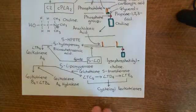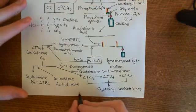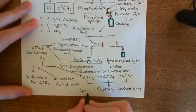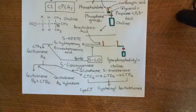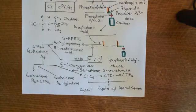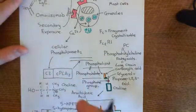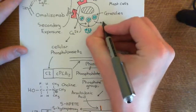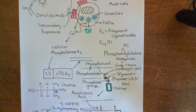The cysteinyl leukotrienes — leukotriene C4, D4, and E4 — are always found together, never in isolation, so it makes sense to think of them collectively. They are abbreviated as cys-LT. So overall, the mast cell is producing histamine, leukotriene B4, the cysteinyl leukotrienes, and also tumor necrosis factor alpha, which is another very important product.